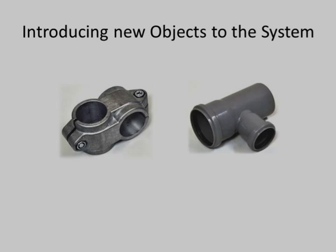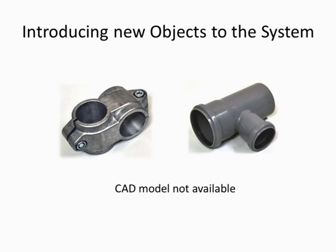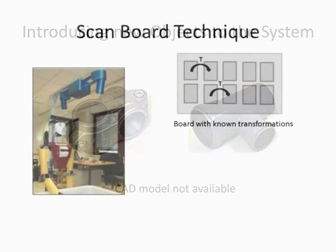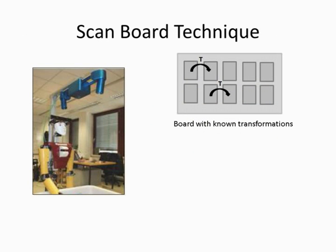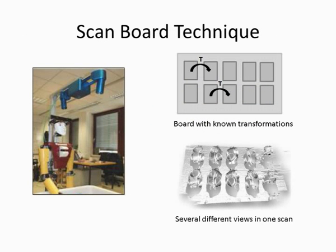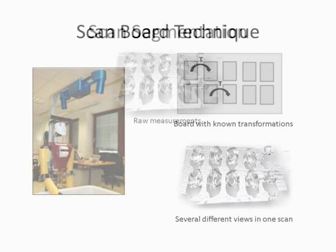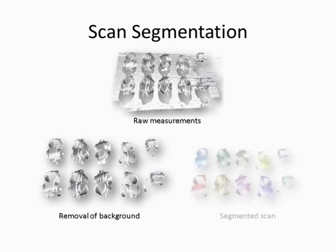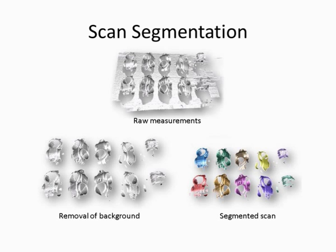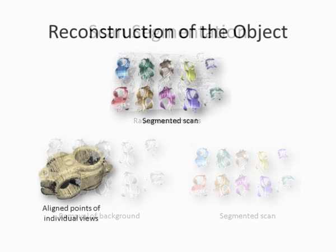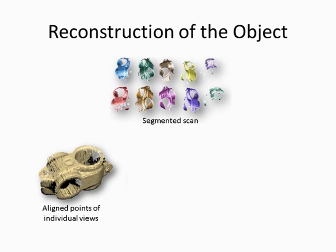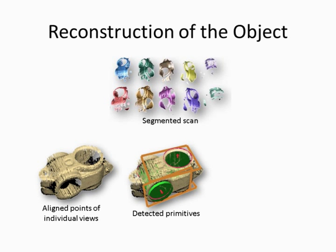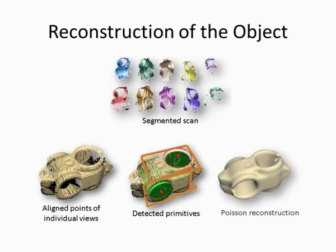Our system is able to learn new objects from scans if no CAD model can be provided. Therefore, we introduce a technique where we acquire many different views of the object in one scan. To process this input, we remove the background and segment the single views of the object. Using this data, we are able to align all segments correctly, learn the needed primitive plan, and show a reconstructed mesh to the user for verification.